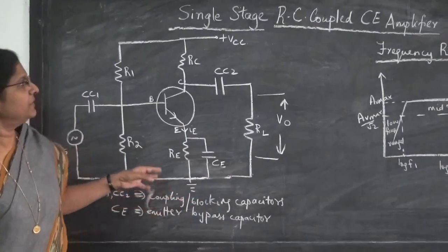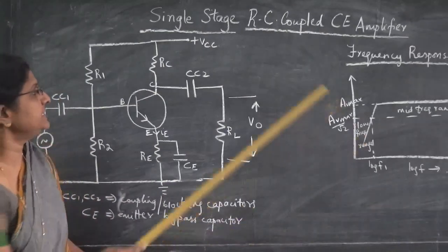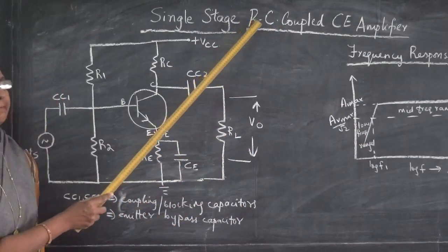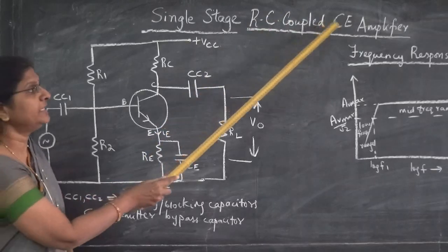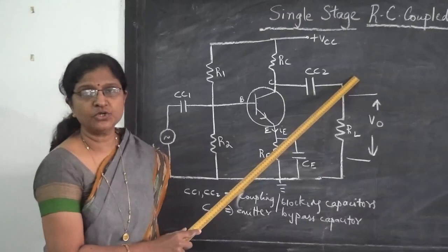Today I am going to discuss the working of a single stage RC coupled CE amplifier. This is a resistance capacitance coupled common emitter amplifier. We will discuss the circuit diagram and the frequency response curve.